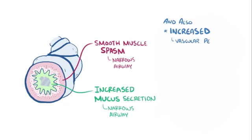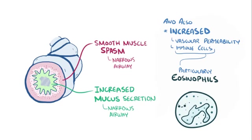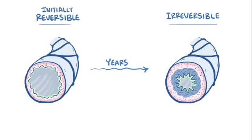There's also an increase in vascular permeability and recruitment of additional immune cells from the blood. These immune cells, especially eosinophils, release chemical mediators that physically damage the endothelium of the lungs. Initially, these inflammatory changes are completely reversible, but over the years irreversible changes start to take place.